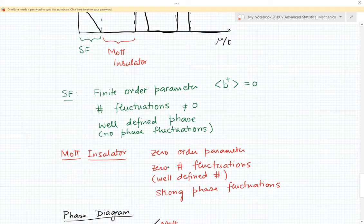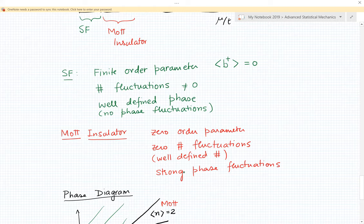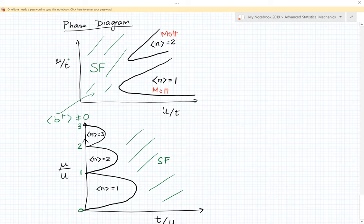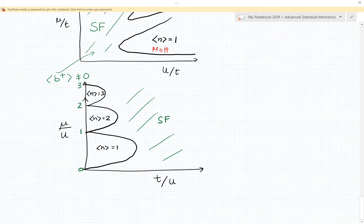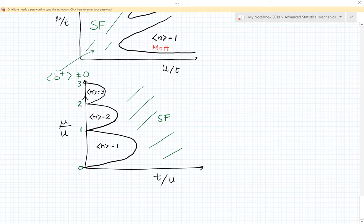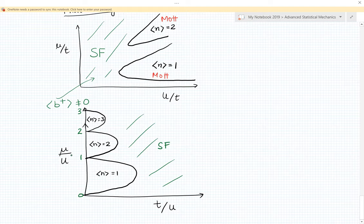We can get a phase diagram now in terms of the two parameters mu over t and U over t, demarcating regions where the order parameter is non-zero (that's the green region) from the regions where the order parameter is zero and density is fixed (those are the Mott insulating regions). You can see here that if I were to fix the chemical potential and tune U over t, then there'll be a quantum phase transition from the superfluid phase to a Mott phase at zero temperature.